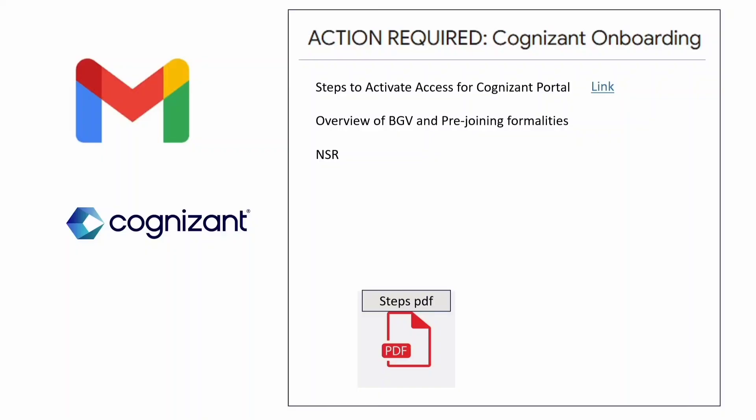This action required mail contains a link — clicking that link lets you proceed with the Microsoft account creation steps. Once your account is created, you can sign in and be redirected to the Cognizant portal to review and accept your offer. The mail also gives an overview of BGV and pre-joining formality steps, and it provides instructions on how to create a Microsoft account.